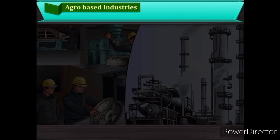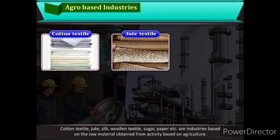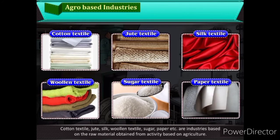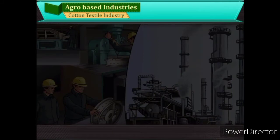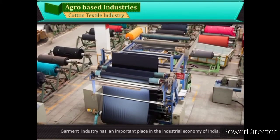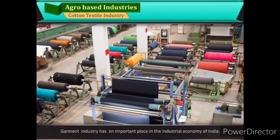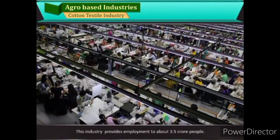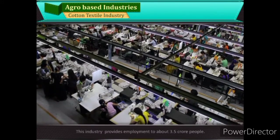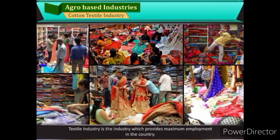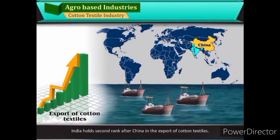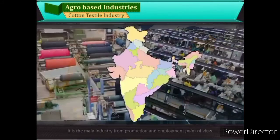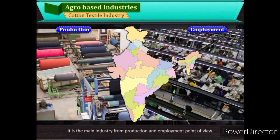Agro-based Industries: Cotton textile, jute, silk, woolen textile, sugar, paper, etc., are industries based on raw material obtained from agriculture. Cotton Textile Industry: The garment industry has an important place in the industrial economy of India. This industry provides employment to about 3.5 crore people. Textile industry provides maximum employment in the country. India holds second rank after China in the export of cotton textiles, and it is the main industry from production and employment point of view.